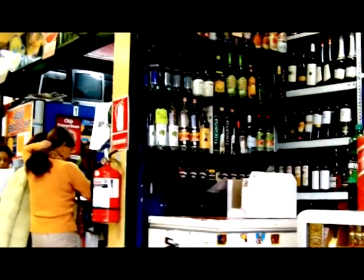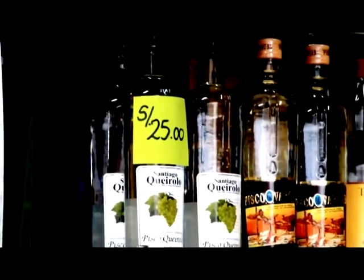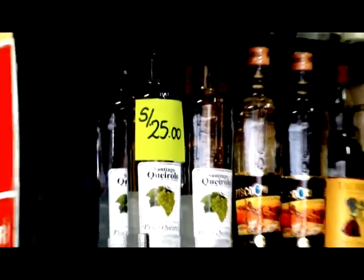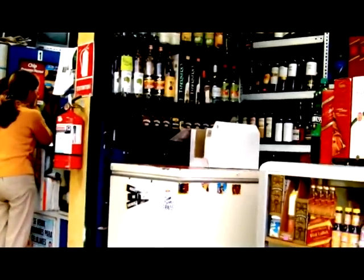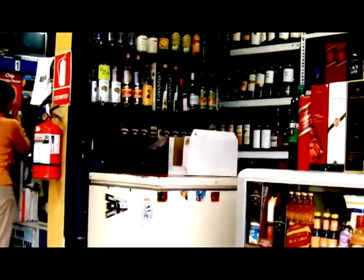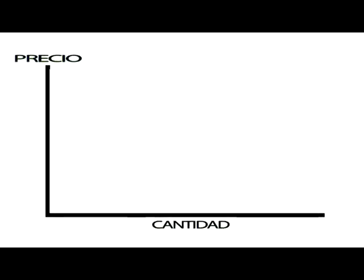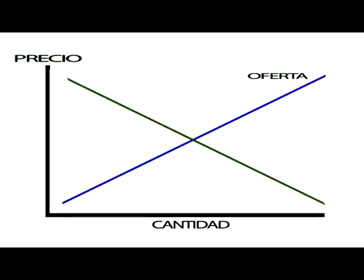Ley de oferta y demanda. Es el principio básico sobre el que se sustenta la economía. La ley de oferta y demanda refleja la relación que existe entre la demanda de un bien en el mercado y la cantidad del mismo que es ofrecido en base al precio que se establezca. La teoría dice que, hablando dentro de un mercado de competencia perfecta, el precio de un bien se situará en un punto de equilibrio donde la demanda sea igual a la oferta.